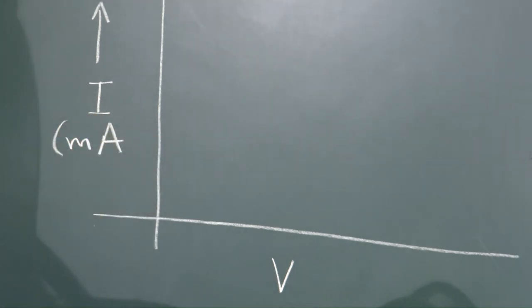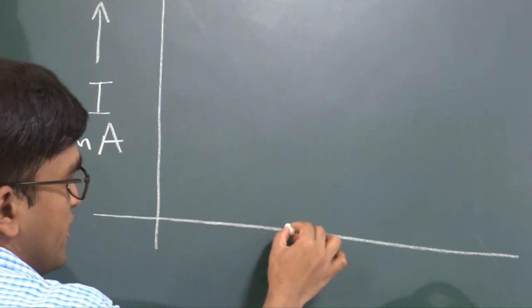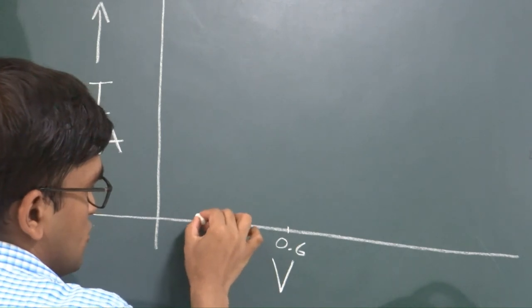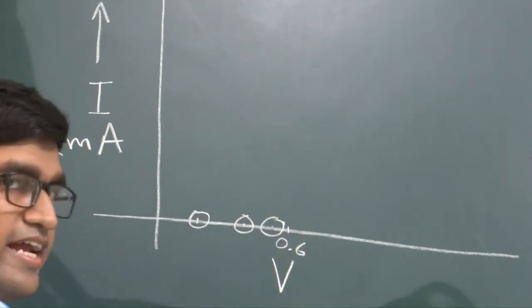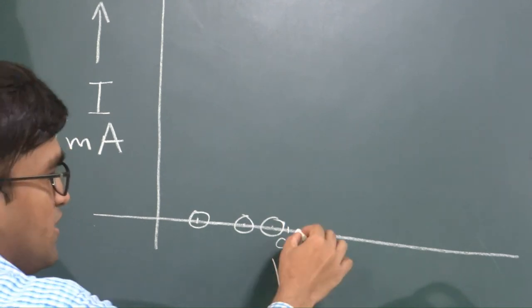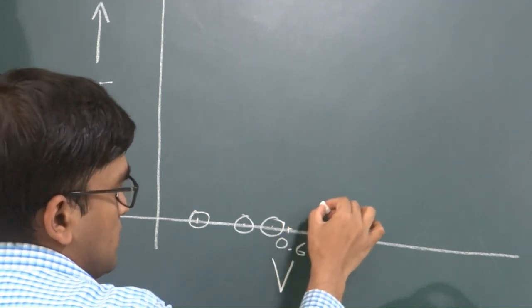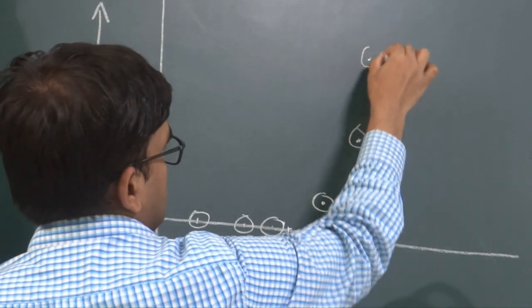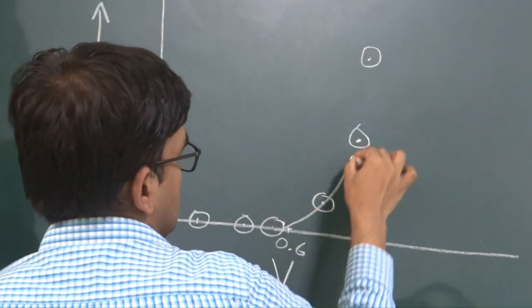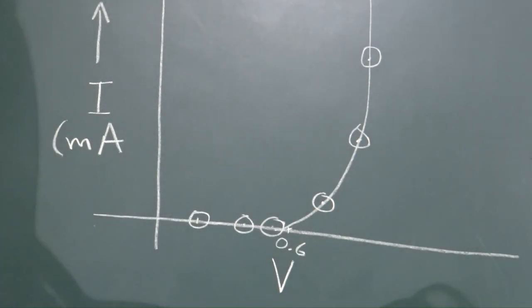As we have seen in the experiment, the initial set of readings till 0.6 comes out to be 0. So you will have 2-3 points over here. At 0.7, the current starts varying. So this would be the graph for the forward characteristics.